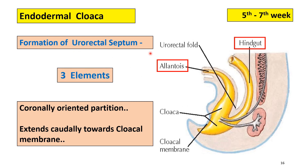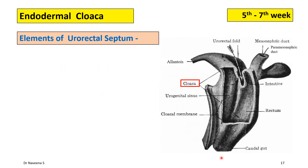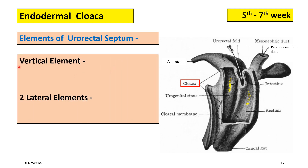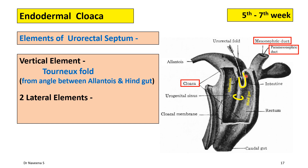The urorectal septum grows more caudally towards the cloacal membrane to fuse with it. Structurally, the urorectal septum has three elements. Observing the interior of the cloaca with the allantois and pre-allantoic part of the hindgut: here is the urorectal fold growing caudally into the cloaca to form the urorectal septum, which has three elements — a vertical element and two lateral elements. The vertical element is formed by the caudal growth of the urorectal fold and is also known as the Tourneux fold, seen at the junction of the allantois and pre-allantoic part of hindgut.